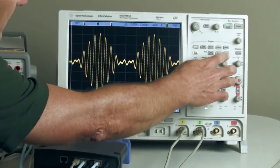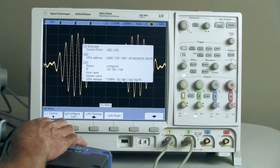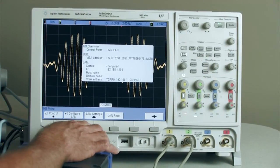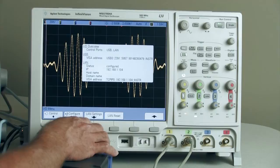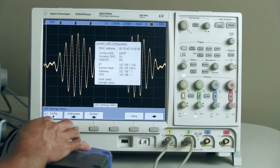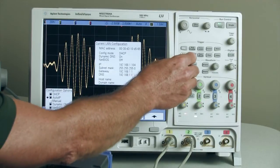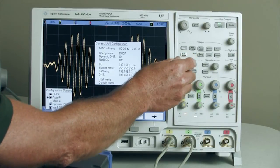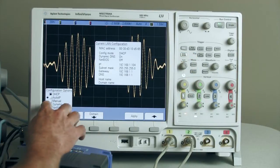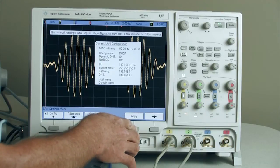So I'm going to demonstrate this with the oscilloscope. So we go in through the utility menu, select IO, and this is our LAN reset. I'm going to go ahead and change the oscilloscope. Instead of using the auto IP function, this time I want to use the DHCP setting. So I've gone ahead and made that change. So we'll go ahead and apply it.